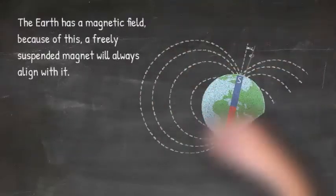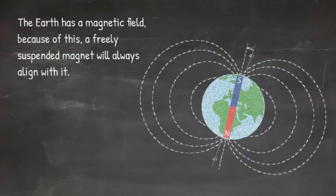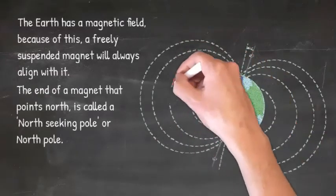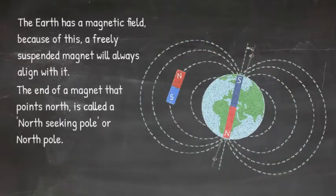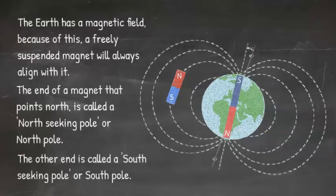The earth has a magnetic field. Because of this, a freely suspended magnet will always align with it. The end of a magnet that points north is called the north seeking pole or north pole. The other end is called a south seeking pole or south pole.